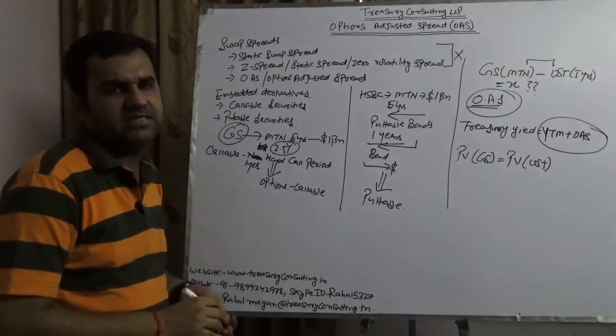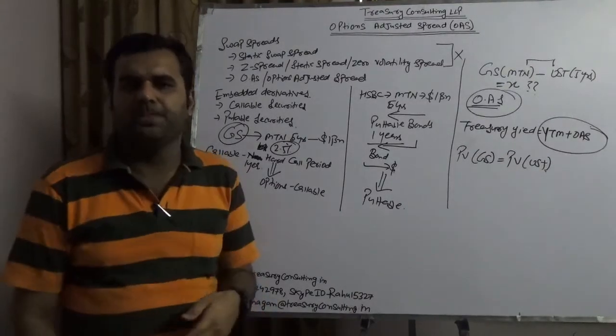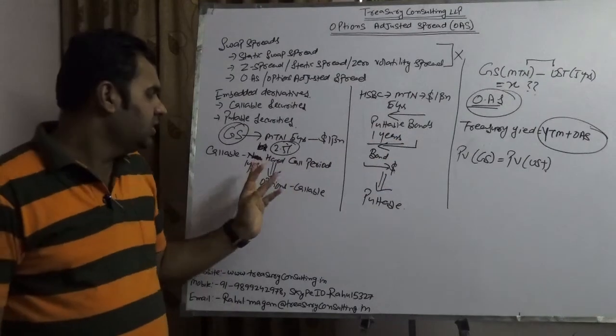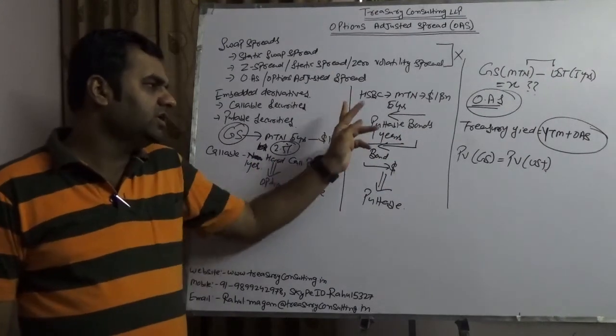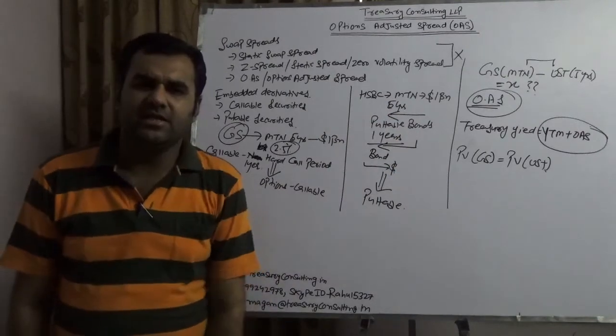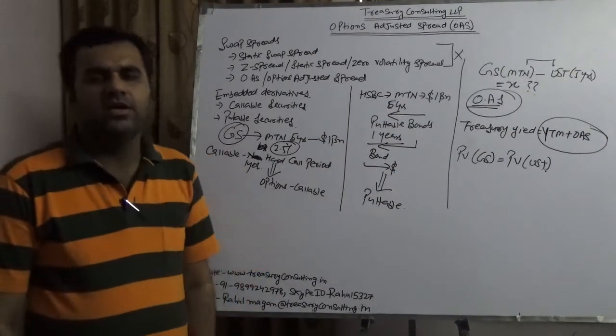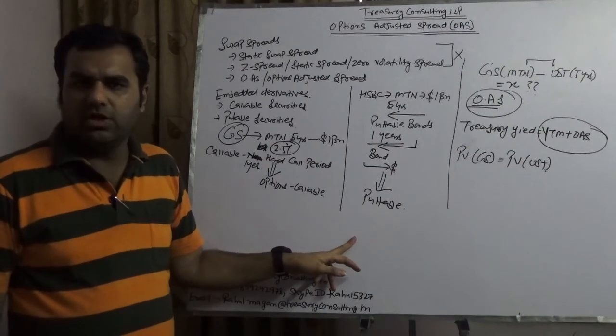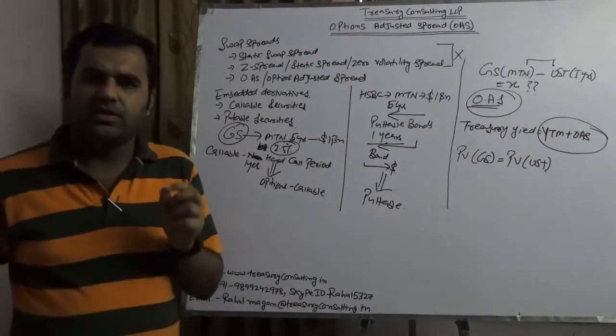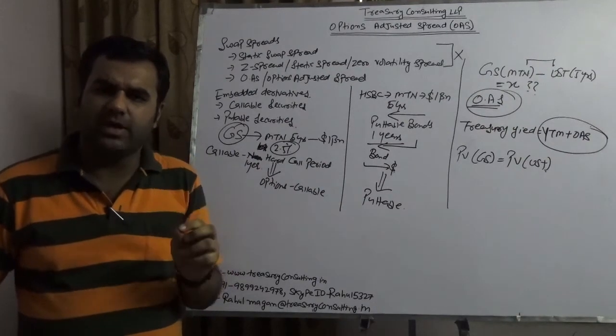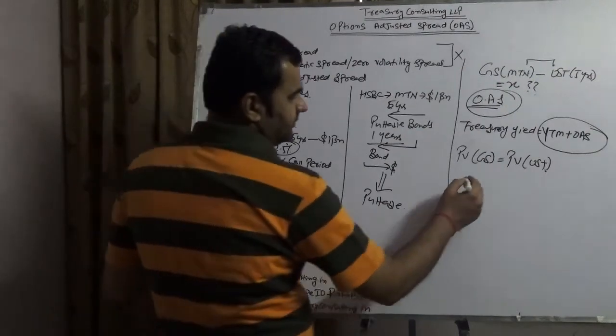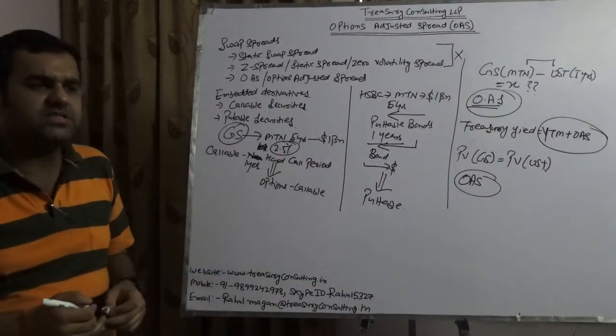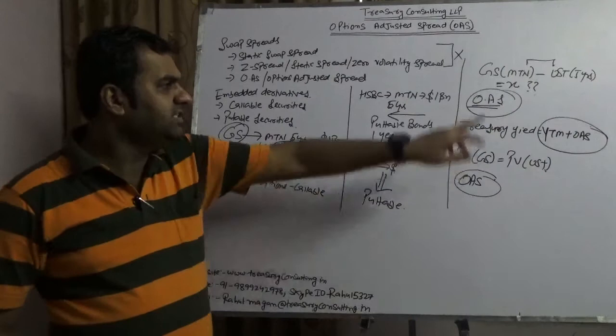So once you do that over the period of time - and remember, this is not static in nature, this is over the period of time - once you do that, the present value of GS equals the present value of UST. Now how would you be calculating that? The answer is very simple: it is a hit and trial approach. You need to exclude the hard call period or hard put period. I repeat, you need to exclude hard call period and hard put period, and then you need to see what is the probability that it can be called and can be put. That probability needs to be converted into basis points, and that basis point is nothing but OAS.